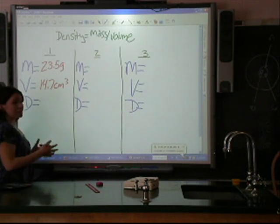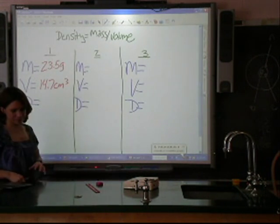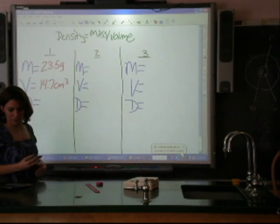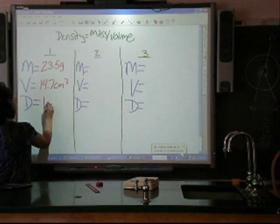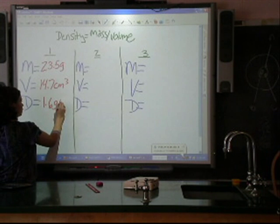To find my density, all I have to do is take the mass divided by the volume. The density of the Play-Doh is 1.6 grams per centimeter cubed.